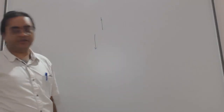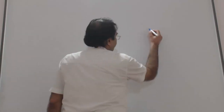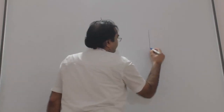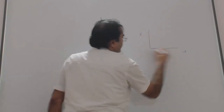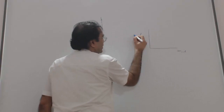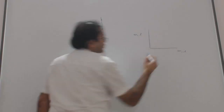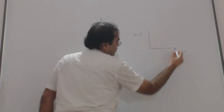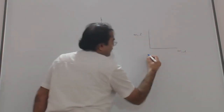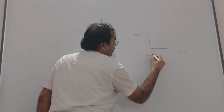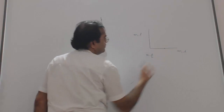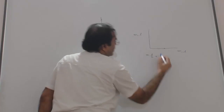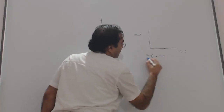For the center of mass discussion, the situation is very easy for the L-shaped rod. Let us say this length is L and this length is also L, this mass is M and this mass is also M. To find the x-coordinate of the center of mass, we use the formula: M into L/2, because for this M the center is at L/2.